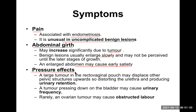Regarding pressure symptoms, a large tumor in the rectovaginal pouch — the pouch between the rectum and the vagina — may displace other pelvic structures upward, distorting the urethra and producing urinary retention. The patient is unable to pass urine, but the urinary bladder is full. If a patient comes to hospital saying they have not passed urine for the last 24 hours, what should be done first?